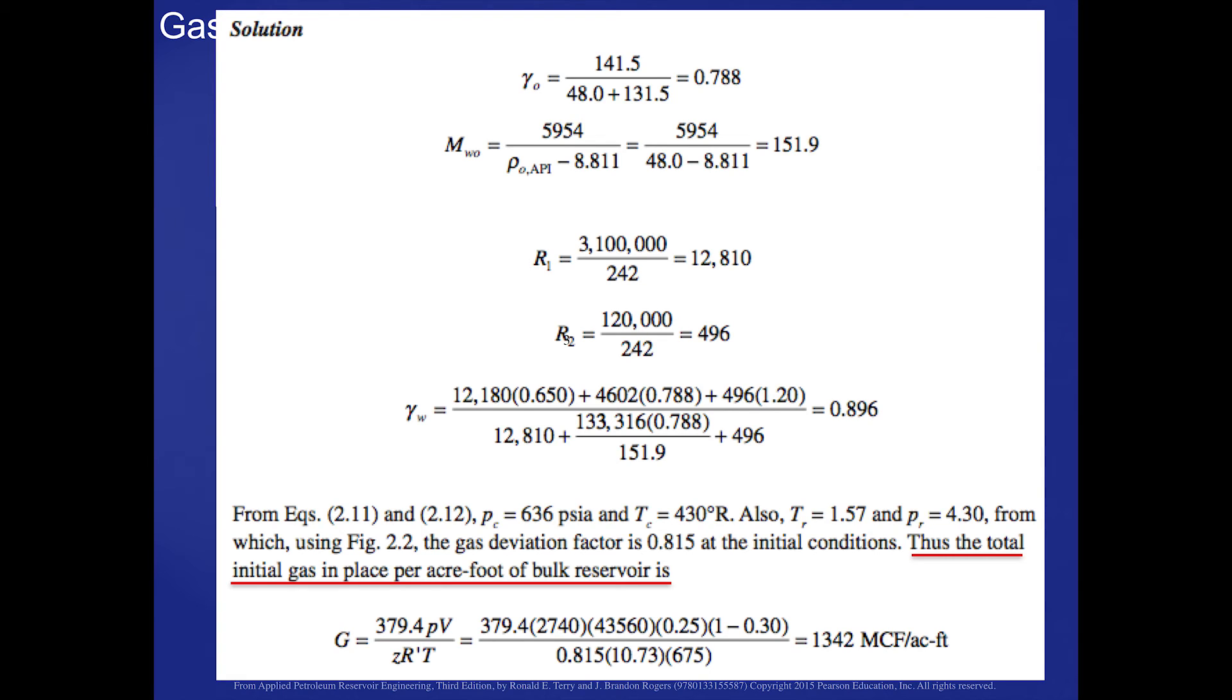the producing gas oil ratios, are calculated from the data that are given in the initial problem statement. And then we can calculate then the specific gravity of the well fluid. It turns out to be 0.896.